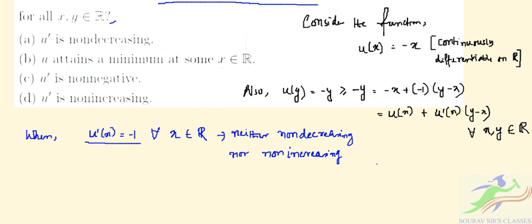As for x ≤ y, we have u'(x) ≤ u'(y) and u'(y) ≤ u'(x). So thus, options a and d are false.